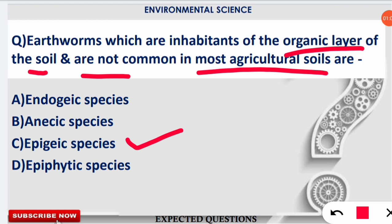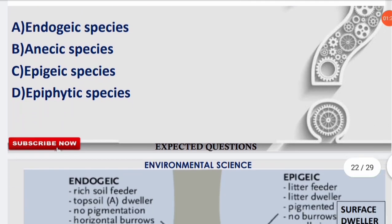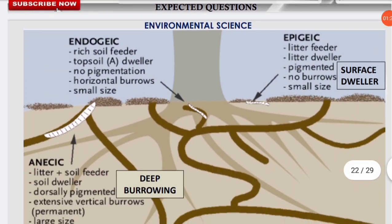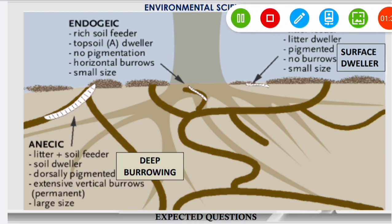We are discussing earthworms in solid and hazardous waste management because the solid waste generated from municipalities — household vegetables and fruit extracts — is used to prepare vermicompost with the help of earthworms. This is a very important topic that frequently comes up in environmental science examinations.